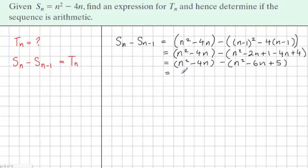Now this time I'm just going to change the sign of the second part and multiply by this minus sign. So it's minus n squared plus 6n minus 5.